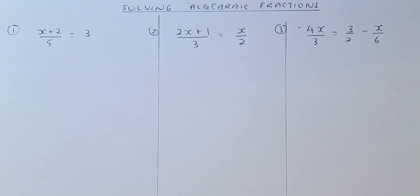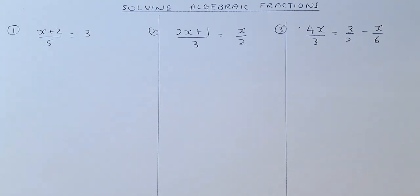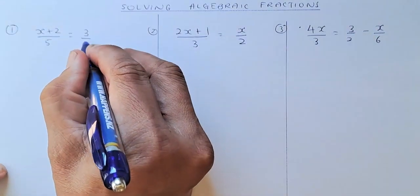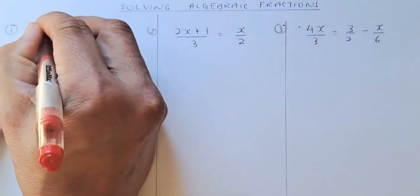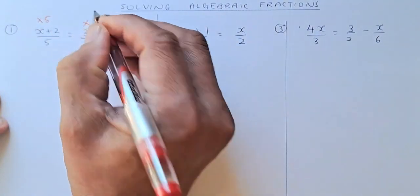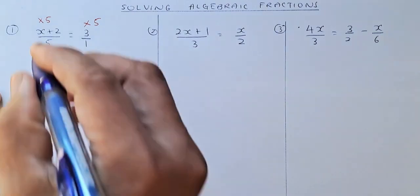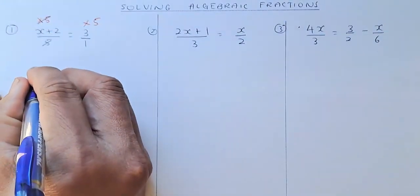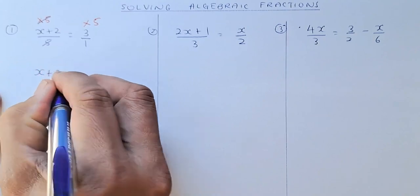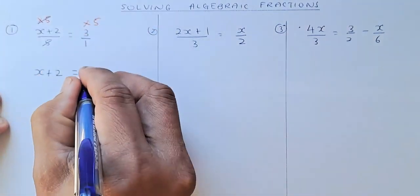So the first question, we look at x plus 2 over 5 equals to 3. The lowest common denominator is 5 because 3 is actually 3 over 1. So you multiply 5 on both sides. When you multiply by 5, the 5 will cancel out. On the left hand side, you are left with x plus 2, and on the right hand side, 3 times 5 is 15.